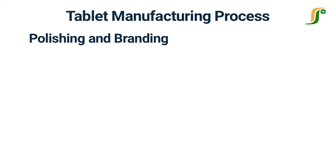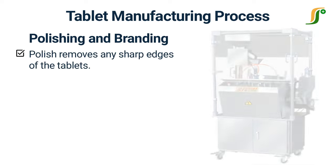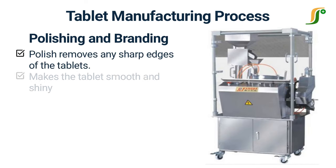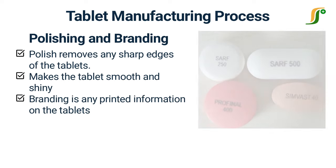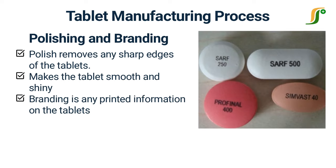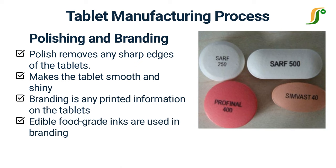When tablets are manufactured and coated, it is required to polish the tablets to remove any sharp edges. It makes the tablet smooth and shiny. Any information printed on the tablets is known as branding. Branding is not a common concept and is used rarely by companies. Edible food grade inks are used in branding. Sometimes the name of the tablet or the strength of the active material is printed on it.